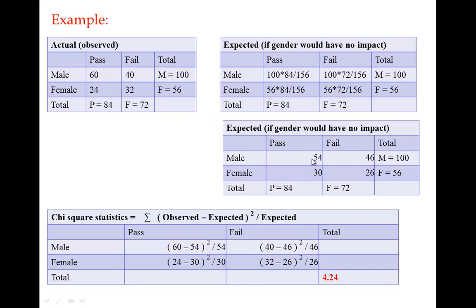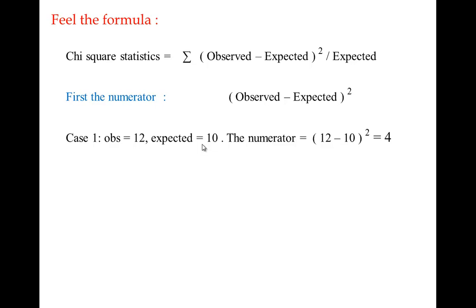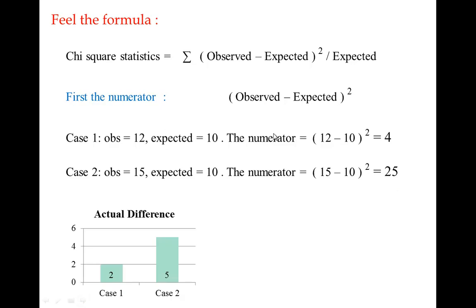The concept behind this is: if gender had no impact, the pass or fail numbers would be close to the expected values. In lieu of 60 you'd expect 54; in lieu of 24 you'd expect 30. If there was no impact, the observed numbers would be very close to the expected. But if the numbers are far apart, you feel there is an impact of gender on the success rate. Let's get a feel of the formula part by part. If observed is 12 and expected is 10, the numerator is (12 − 10)² = 4. If observed is 15 and expected is 10, the numerator is 25.